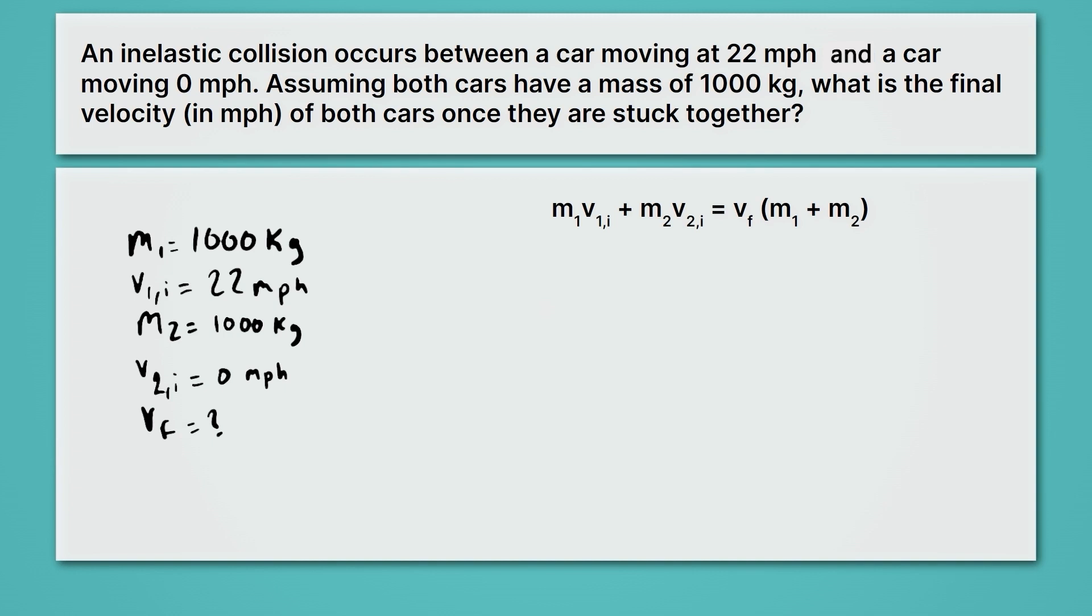So we have here our equation for our inelastic collisions. What we need to do now is just go ahead and plug in the numbers we have for each of our variables. So for the mass of the first one, we'll plug in 1000. And then we'll be multiplying that by the velocity of the first car, 22, plus the mass of the second car, 1000, times the velocity of the second car, which is zero. That's all equal to velocity final times the mass of the first car plus the mass of the second car. Well, all of this will simplify quite nicely, because this whole term goes to zero. And so on the left, we'll get 22,000 equals velocity final times 2000. Last thing we need to do to solve here for velocity final is to divide both sides by 2000.